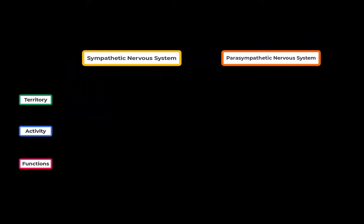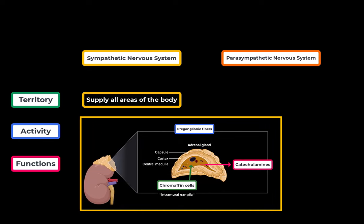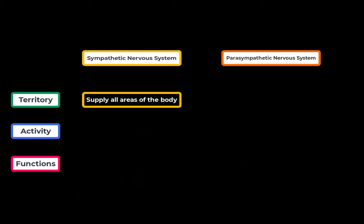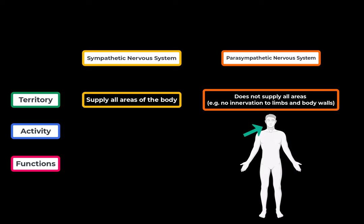There are three main categories where we can see a clear difference between these two systems. In terms of territory, the sympathetic nervous system is going to innervate all areas of the body, primarily because the suprarenal gland is going to release a lot of epinephrine and norepinephrine into the blood. The parasympathetic nervous system is primarily localized to the innervated areas — distribution is focused on the head, the body cavities, and the external genitalia. The limbs and body walls don't receive parasympathetic innervation.